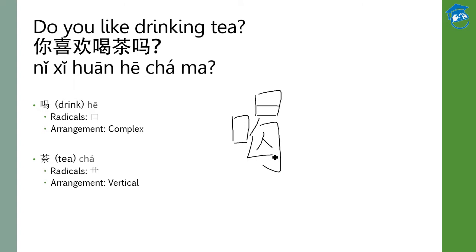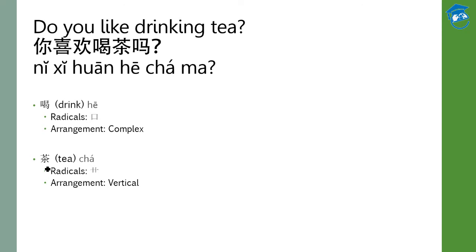There are 12 strokes for this word, 喝. The next word is 茶. 茶 means tea. The pinyin is 茶, and the radical is the component on top.